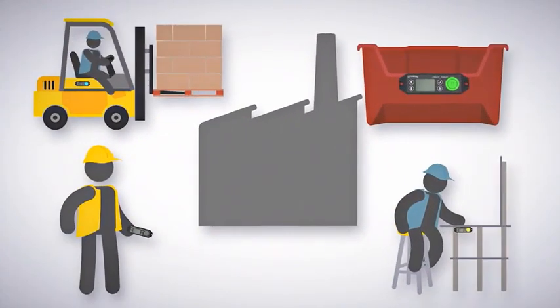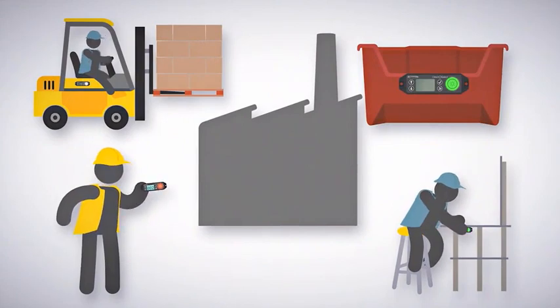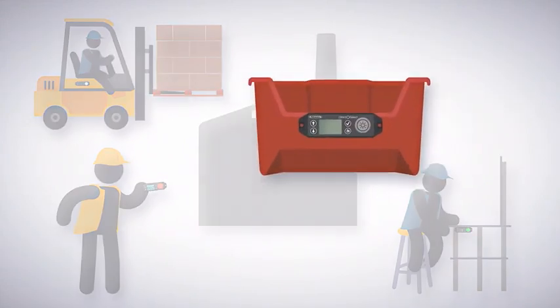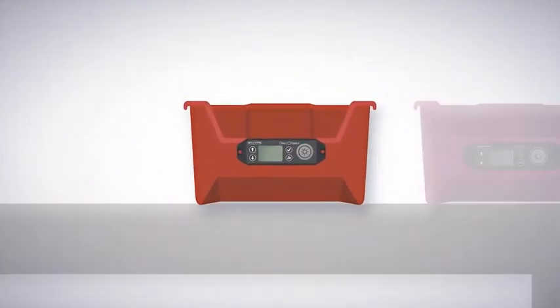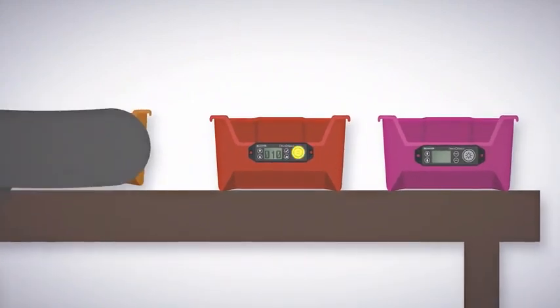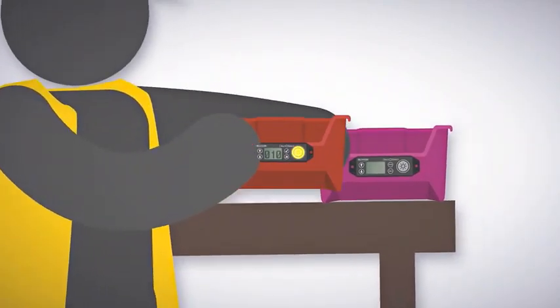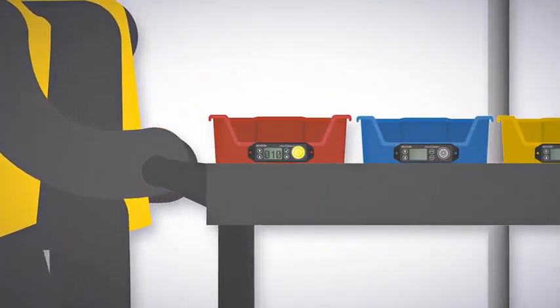The Direct Select can enhance communication. When mounted to containers, the Direct Select node provides alerts and information to workers no matter where the bin is moved to. Use it to codify workstation arrangements based on production needs.